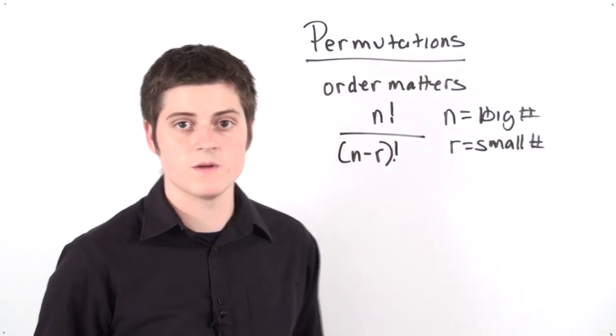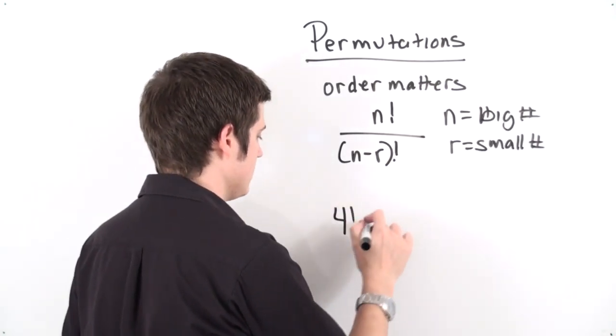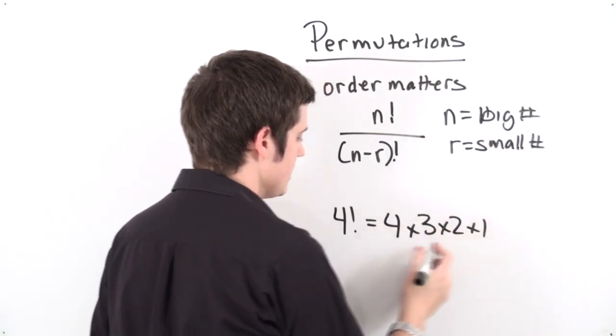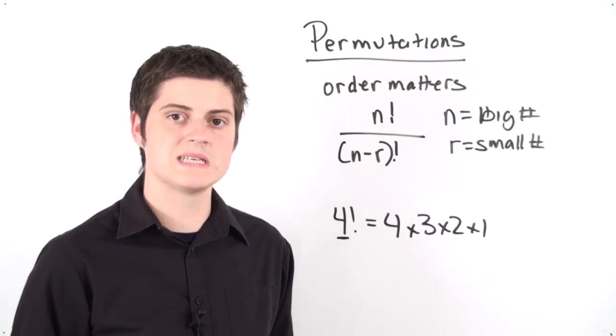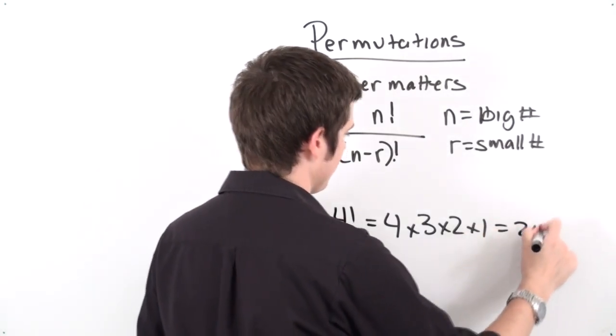Now the exclamation point is called a factorial. For instance, if I have four factorial, this is going to be equal to four times three times two times one. You take whatever number is next to your factorial sign, you multiply it by all whole preceding numbers until you get to one. So four factorial is going to get me 24.